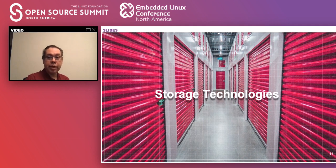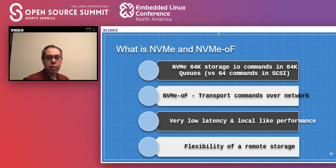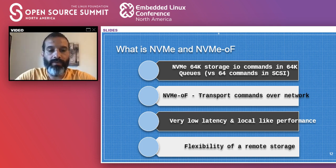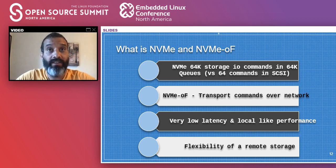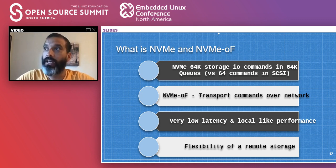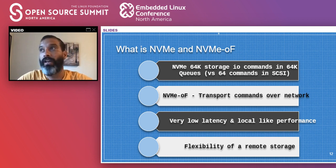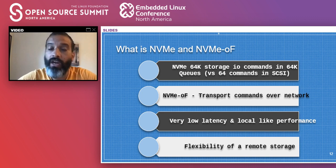Now let's talk about storage technologies. To put it in perspective: when SCSI came into existence, storage needs were in kilobytes or megabytes. Today's storage needs are in terabytes or petabytes. Also at that time, drives were on large servers. Today we're talking about containers that come up in seconds or microseconds and need storage immediately.